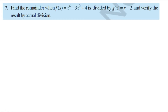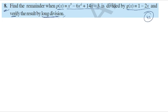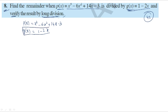By remainder theorem, first we need to find the zero of g of x. Setting 1 minus 2x equals 0, we get minus 2x equals minus 1, and the minuses cancel, so x equals 1 by 2. The zero of this linear polynomial is x equals 1 by 2.